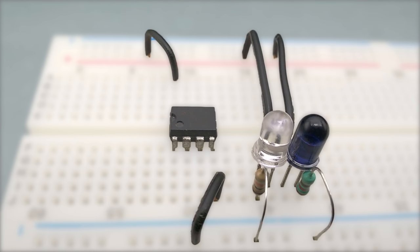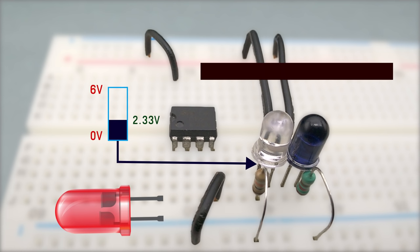All we need to do is use the comparator to turn on the output whenever the voltage at the infrared photodiode is more than the reference voltage.